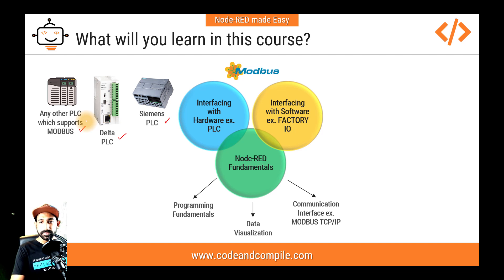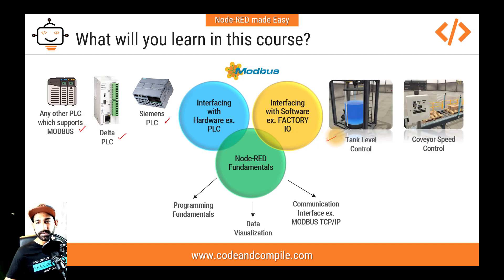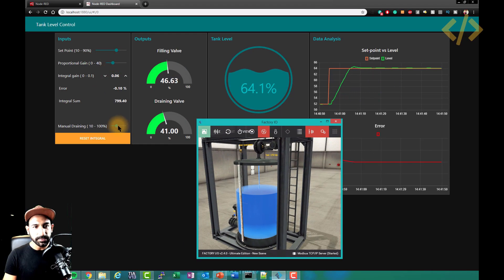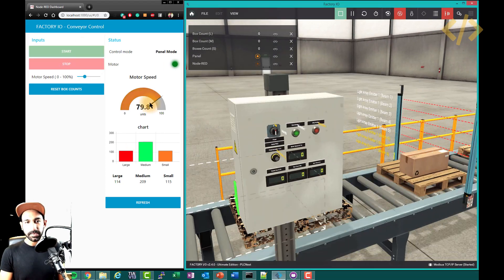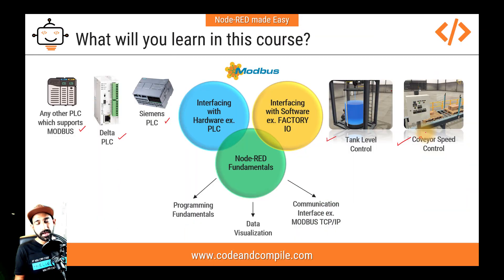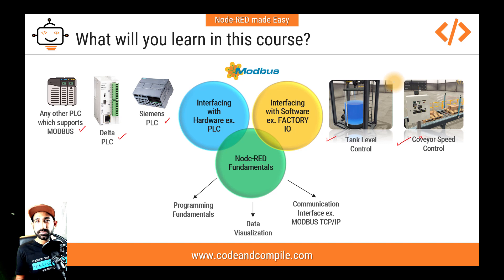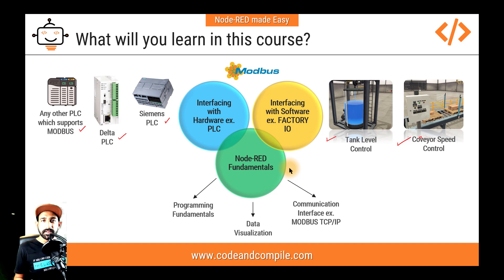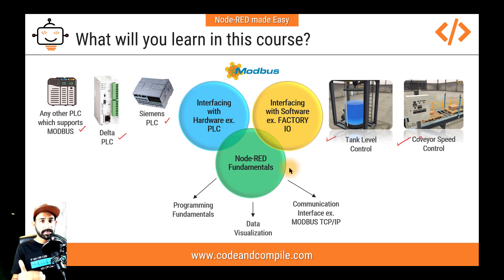We also cover how to interface with Factory IO, so you can control tank level or conveyor speed control and many other environments via Modbus. Factory IO has a 30-day trial version, so you can learn to interface it with Node-RED even if you don't have hardware. This is the base course. Once you understand programming, data visualization, and communication interfaces here, we will proceed with further mini modules.